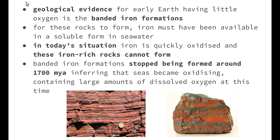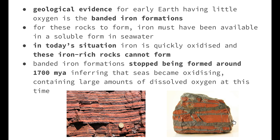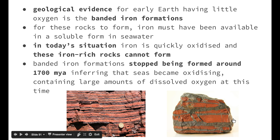We can see in the pictures the definite areas that show the iron formations. Banded iron formations are simply where the iron in the seawater combined with oxygen to form these rusty-type areas of rock in between the other layers.